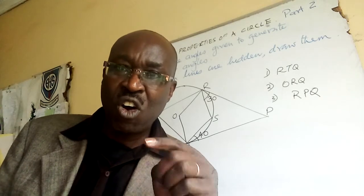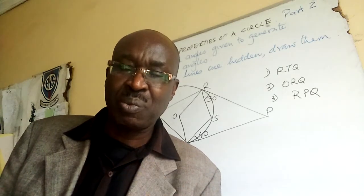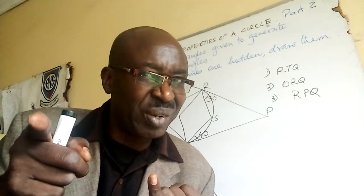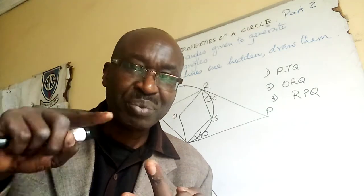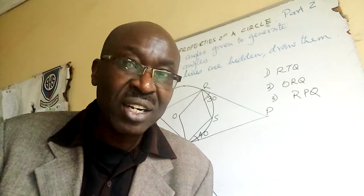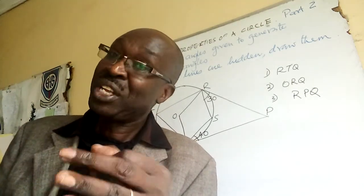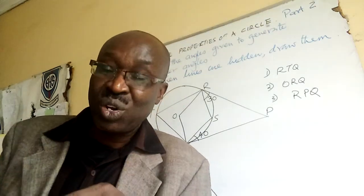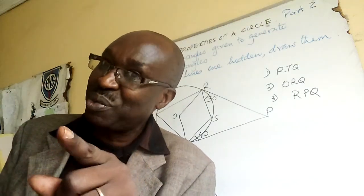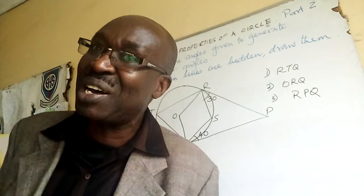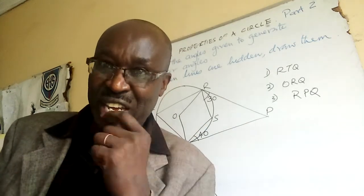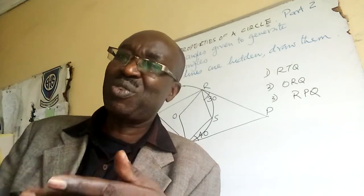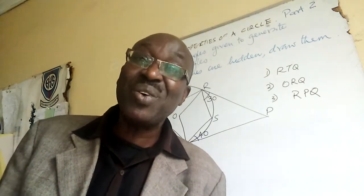Number four, alternate segment theorem. So in short, anytime you see a diameter there is something he's testing, anytime you see a chord there is something he's testing, anytime you see a cyclic quadrilateral he wants to know if you remember opposite angles add to 180, anytime you see a tangent there is alternate segment theorem, and of course parallel lines. Then you are done.